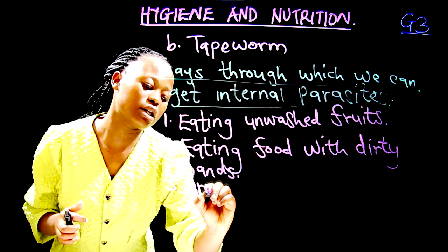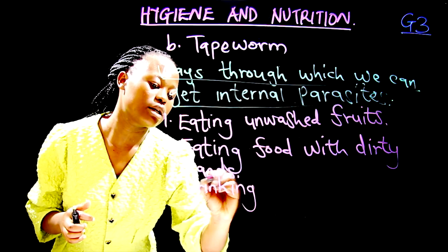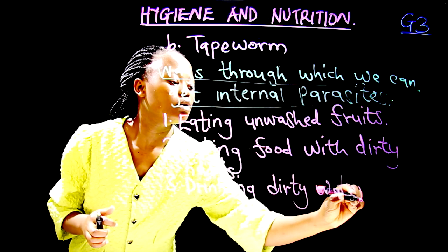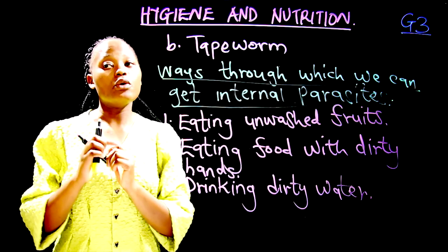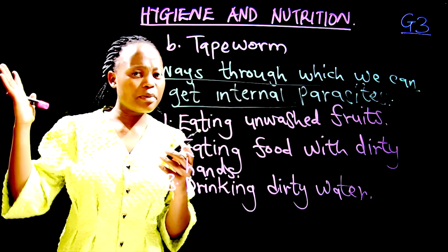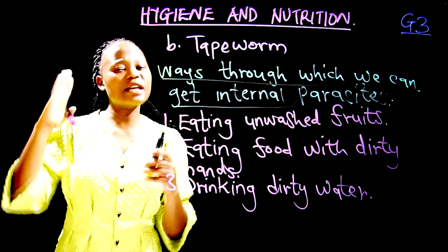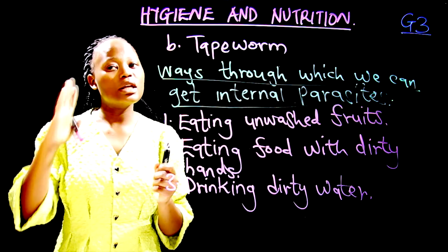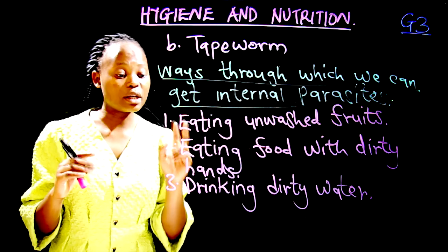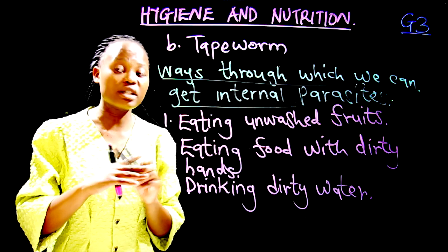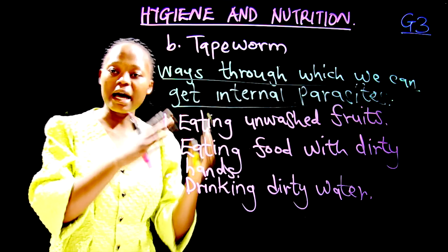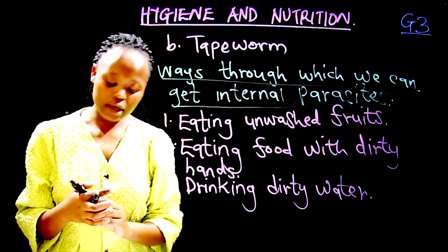Number three: drinking dirty water. When we drink dirty water, we will probably get internal parasites. In our previous lesson we looked at safe drinking water — water that is safe must be boiled or treated. When you drink water that is dirty or contaminated, you will get internal parasites.